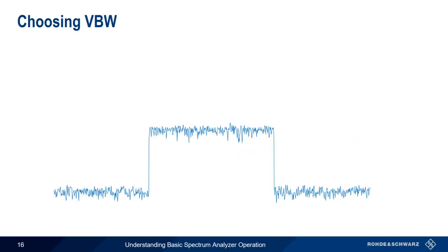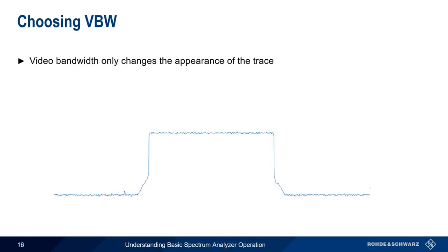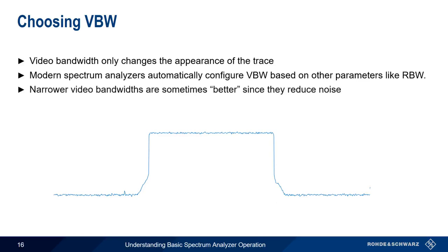So how do we choose our video bandwidth? Video bandwidth only changes what the trace looks like, so to a certain extent the correct video bandwidth setting depends on the application. That said, most modern spectrum analyzers will automatically configure and update video bandwidth based on other parameters like resolution bandwidth. In many cases, a smaller or narrower video bandwidth might seem desirable since it reduces noise on the trace. But just like resolution bandwidth, video bandwidth does have an effect on the sweep time. The smaller or narrower the video bandwidth, the longer the sweep time.